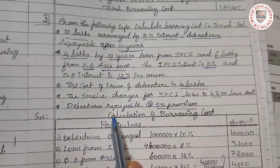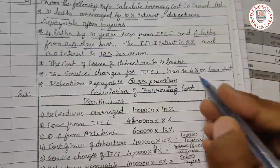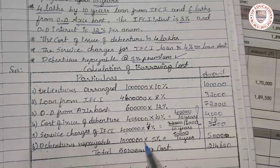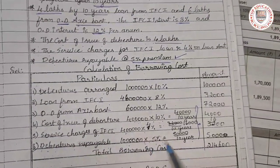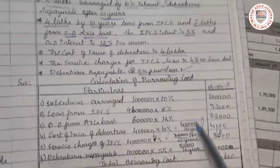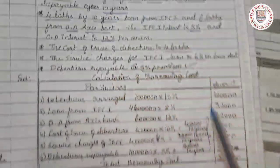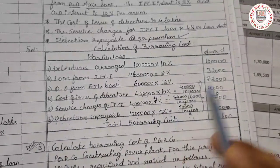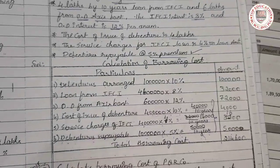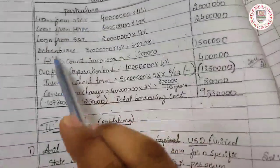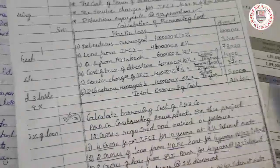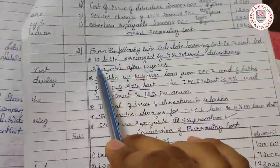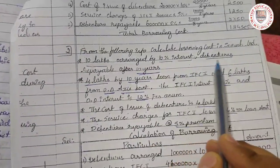Debentures are repayable at 5 percent premium. If it is premium, you write: 10 lakhs multiplied by 5 percent equals 50,000, divided by 10 years, because the amount is repayable after 10 years. If it is a premium we make a normal positive entry, but if it is a discount we will minus it here. For debentures minus a discount — if it is a discount you minus, if it is a premium the normal entry applies.